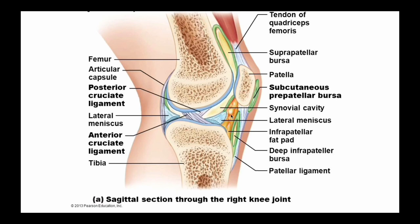Another structure to be aware of is the infrapatellar fat pad, illustrated here by the orange-yellowish tissue. This is also called Hoffa's fat pad and can at times become pinched in the knee and become inflamed. While it is occasionally a source of pathology, I encourage caution when diagnosing it as such.